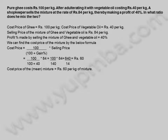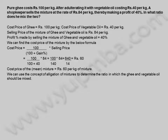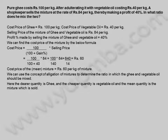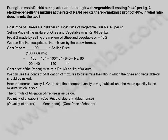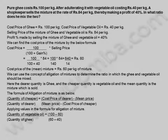We can use the concept of allegation of mixtures to determine the ratio. The dearer quantity is ghee and the cheaper quantity is vegetable oil, and the mean quantity is the mixture. The formula is: quantity of cheaper / quantity of dearer = (cost price of dearer − mean price) / (mean price − cost price of cheaper). Applying values: quantity of vegetable oil / quantity of ghee = (100 − 60) / (60 − 40) = 40 / 20 = 2 / 1.